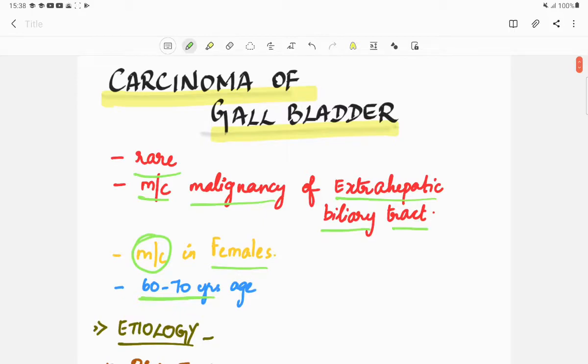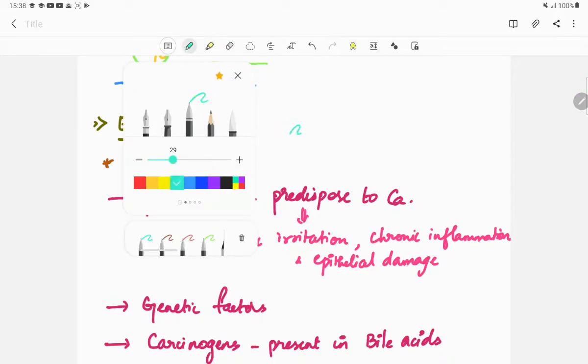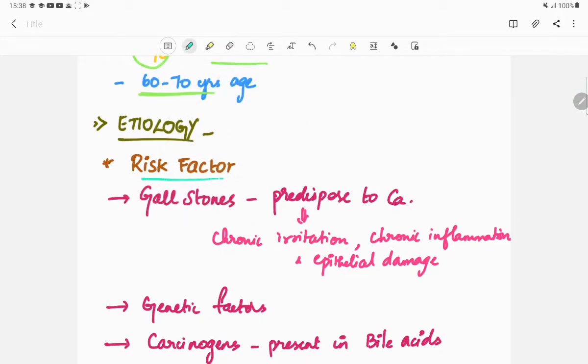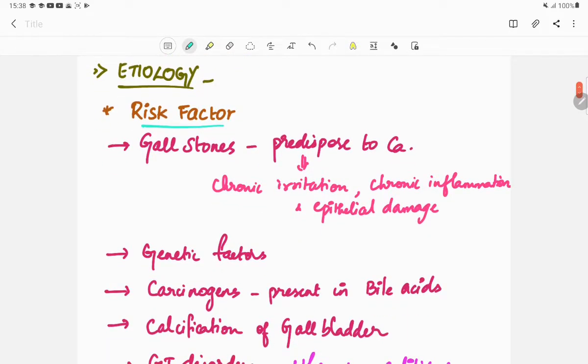It is more common in females of age 60 to 70 years. Coming to the etiology, first are the risk factors. The risk factors of gallbladder carcinoma include gallstones which predispose to gallbladder carcinoma.